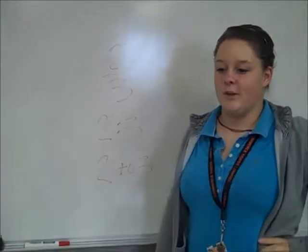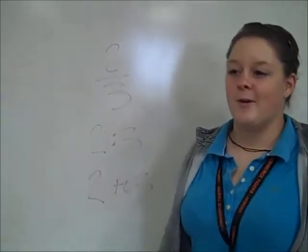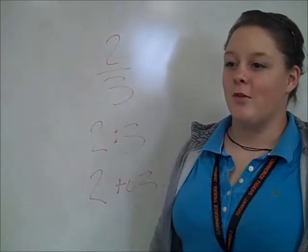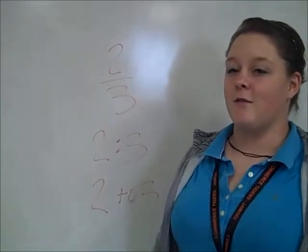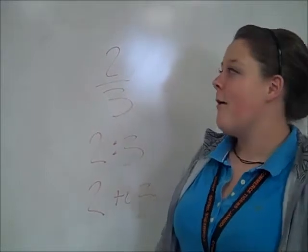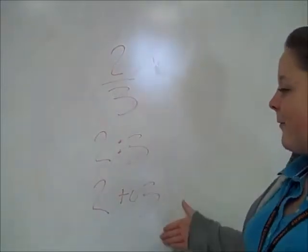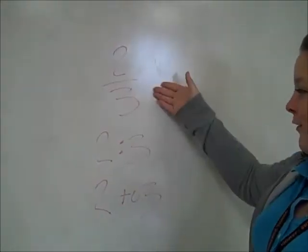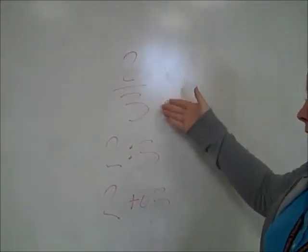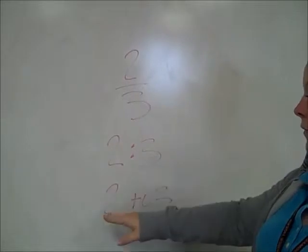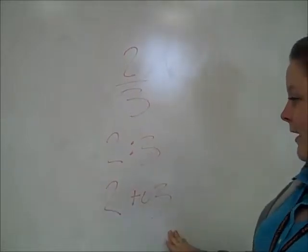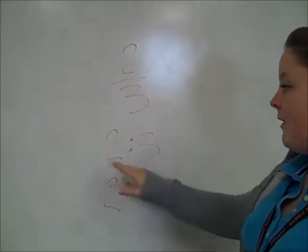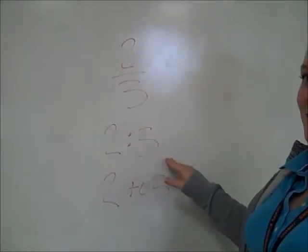I'm doing ratio. The quotient when one number is divided by another, mostly written in fraction form. But here we have three forms: the fraction form, 2 to 3, and 2 to 3.